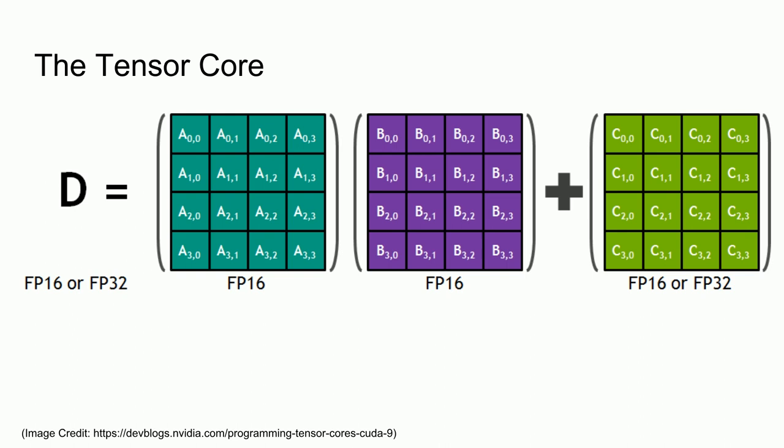What is a Tensor Core? It's a specialized function unit within the Volta architecture, which performs matrix-matrix multiplication and addition. Here is a diagram demonstrating the operation, where a Tensor Core takes the inputs A, B, and C, and produces the output D. Ordinarily, for scalar numbers, i.e. non-matrices, this would be a simple fused multiply-add.